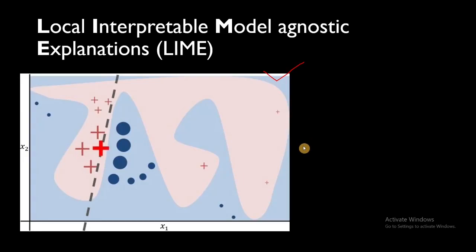Let's now look at this plot. This is a plot for a classification method where x1 is one feature and x2 is the second feature. The red portion is the decision boundary of a very complex black box algorithm, where red belongs to class zero and blue belongs to class one. Our task is to generate an explanation for a particular sample from the zero class, marked with a red cross.